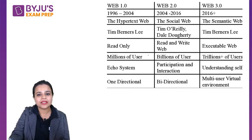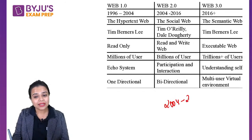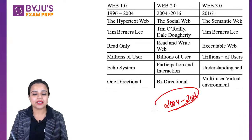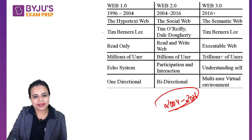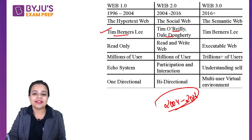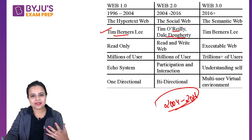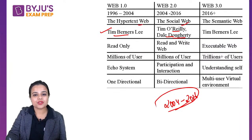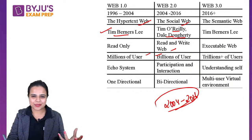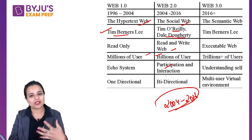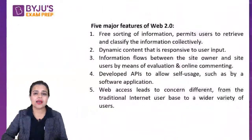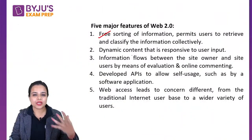The timeline of Web 2.0 started from 2004 till 2016 — until Web 3.0 started, it was the era of 2.0. Web 1.0 was coined by Tim Berners-Lee, and Web 2.0 by Tim O'Reilly and Dale Dougherty. Web 1.0 is called the Hypertext Web, and Web 2.0 is called the Social Web. Users grew from millions to billions. You could read and write now — participation became bi-directional.